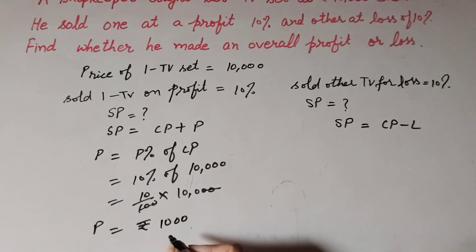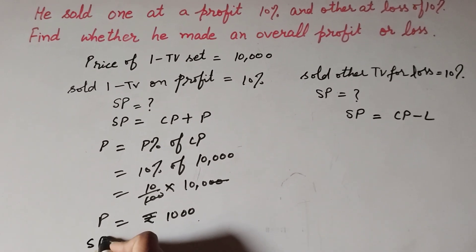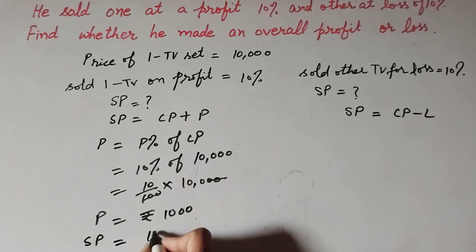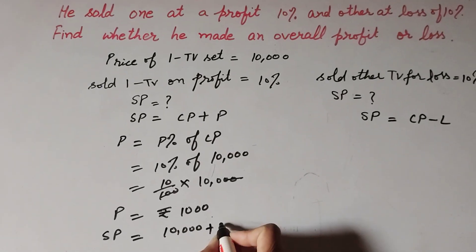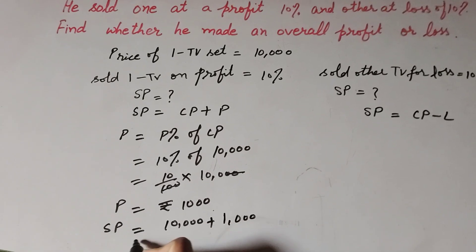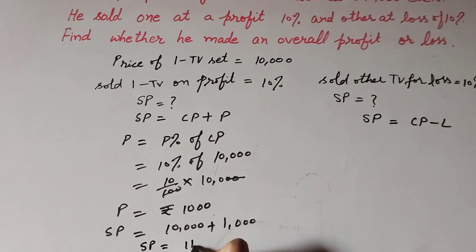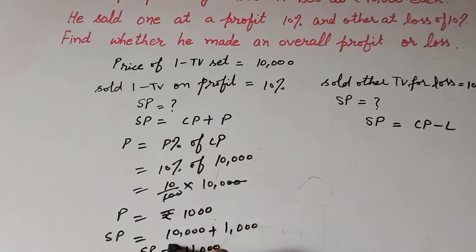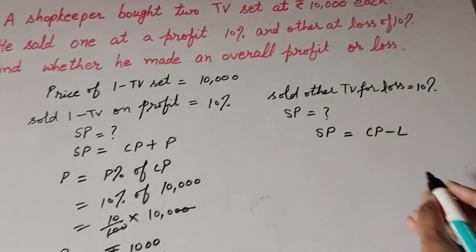Now we find the selling price of the first TV sold at 10 percent profit. Selling price equals cost price plus profit, which is 10,000 plus 1,000. So the selling price of this TV is equal to rupees 11,000.